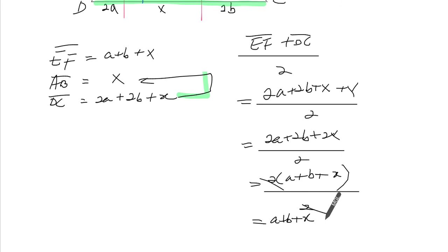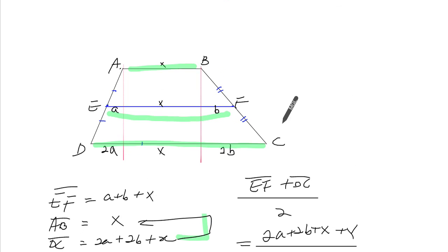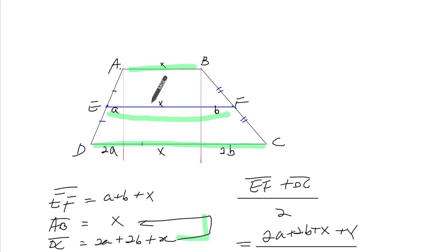And that's indeed EF. In other words, in a trapezoid, the middle length is always the average between the top length and the bottom length.